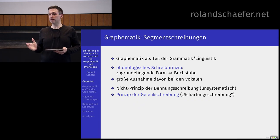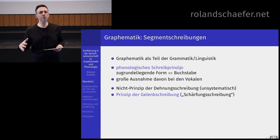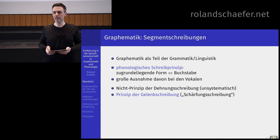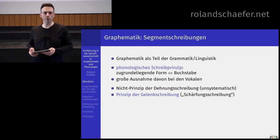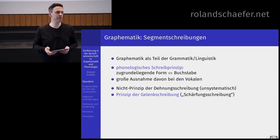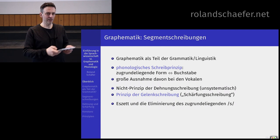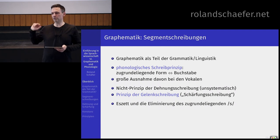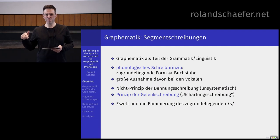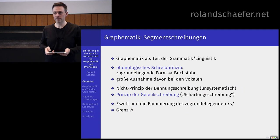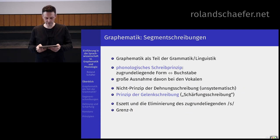Das echte Prinzip, was wir haben, wird oft unterrichtet als das Gegenüber von der Dehnungsschreibung: das ist die Gelenkschreibung oder Schärfungsschreibung. Das sind zum Beispiel die Doppelkonsonanten, wie in Hülle, Mitte und so weiter. Dann werde ich sprechen, mein Lieblingsthema, über das SZ und dann nochmal über das zugrunde liegende stimmlose S. Da haben wir in der Phonologie mal drüber geredet. Ich werde etwas über das Grenzhaar erzählen. Das ist ein H, was keine Dehnungsschreibung und kein Segment ist.